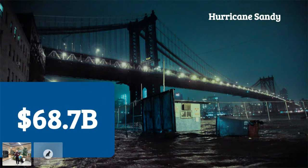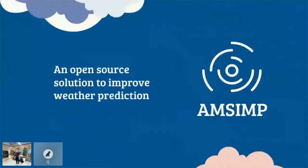There have been fantastic developments in machine learning over the last few years, and we would like to apply these enhancements to make weather prediction better for everyone. So today, we're introducing AMSIMP, an open source solution that leverages machine learning to make weather prediction better for everyone.